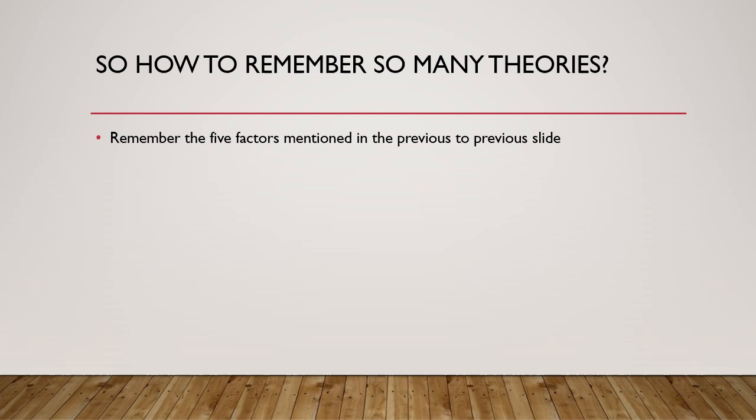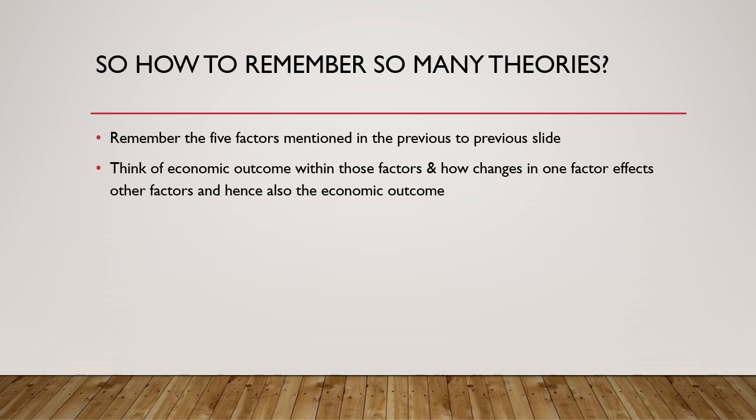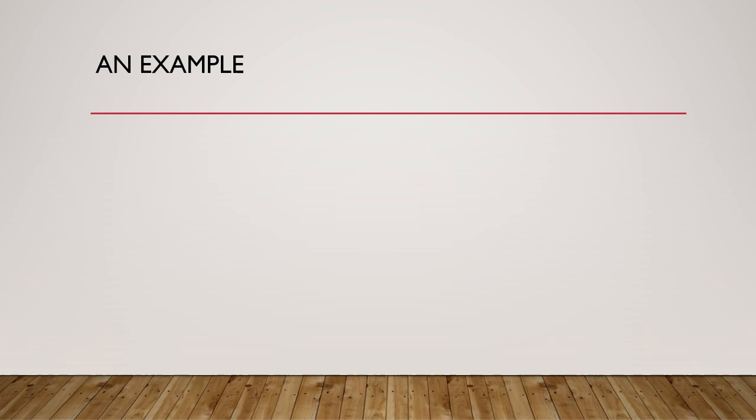How do we remember so many theories and economic schools of thought? Remember the five factors discussed earlier. Think of economic outcomes within the parameters of those five factors, and how changes in one factor can lead to changes in other factors, and together how they influence economic outcomes. That is more important than memorizing the various theories, though knowing about the economic schools of thought and the evolution of economics does enhance our economic understanding and make the whole subject interesting.